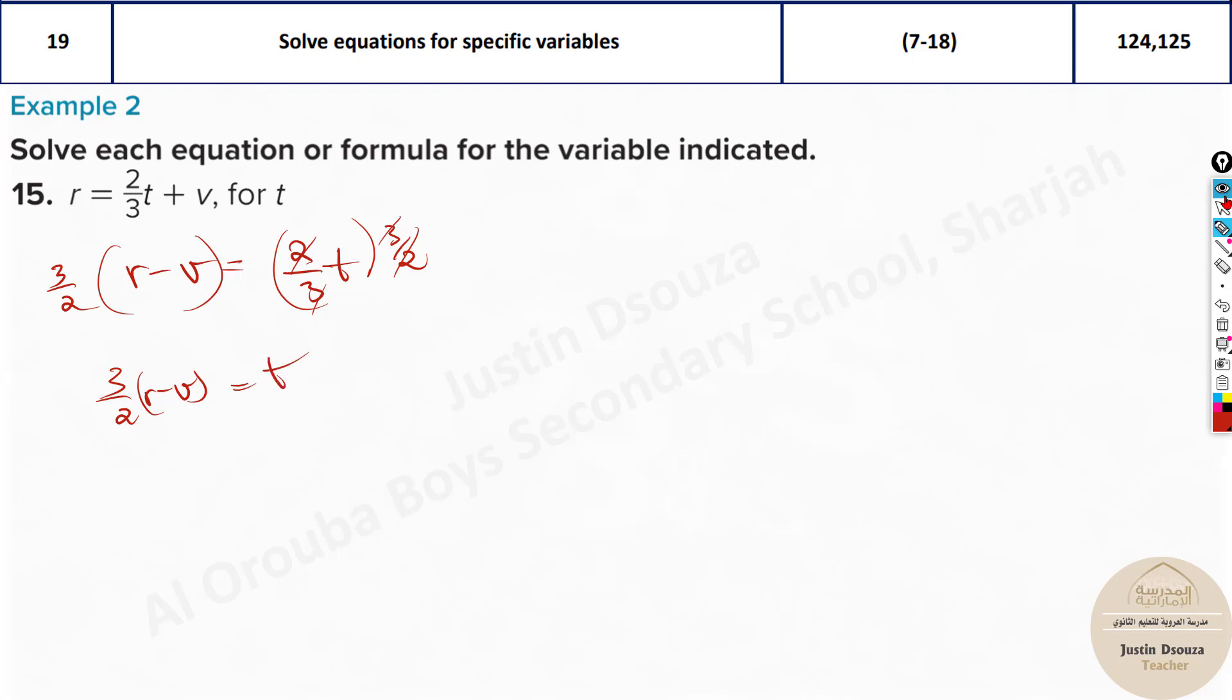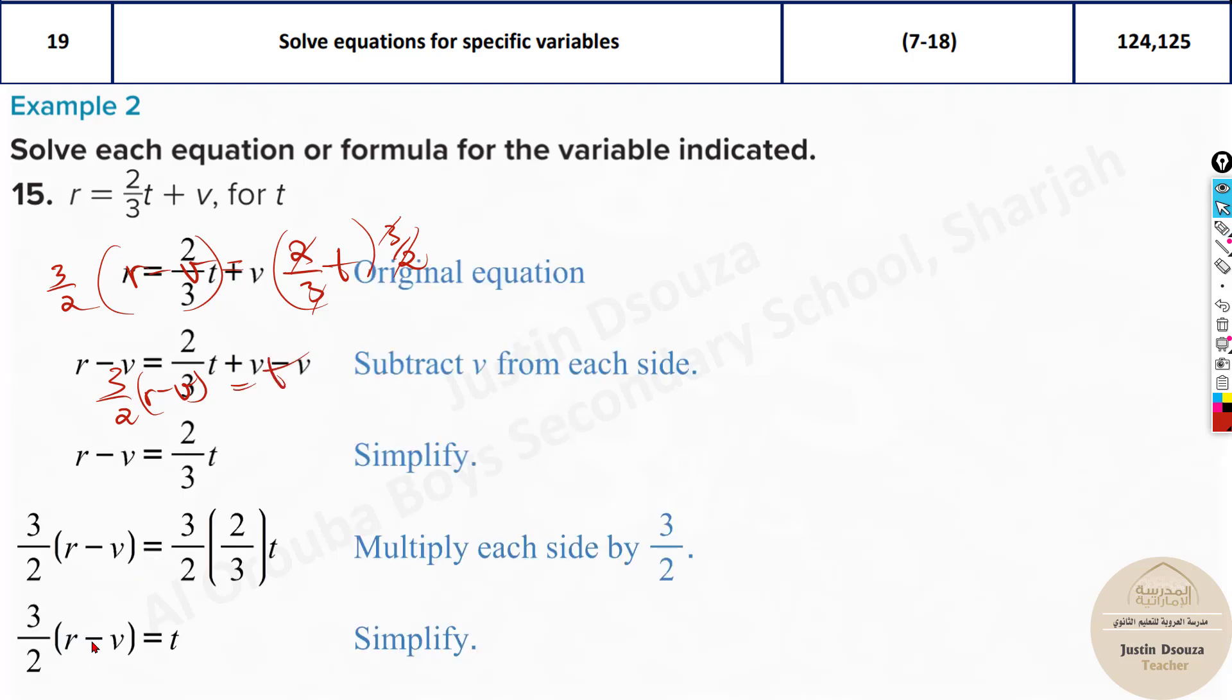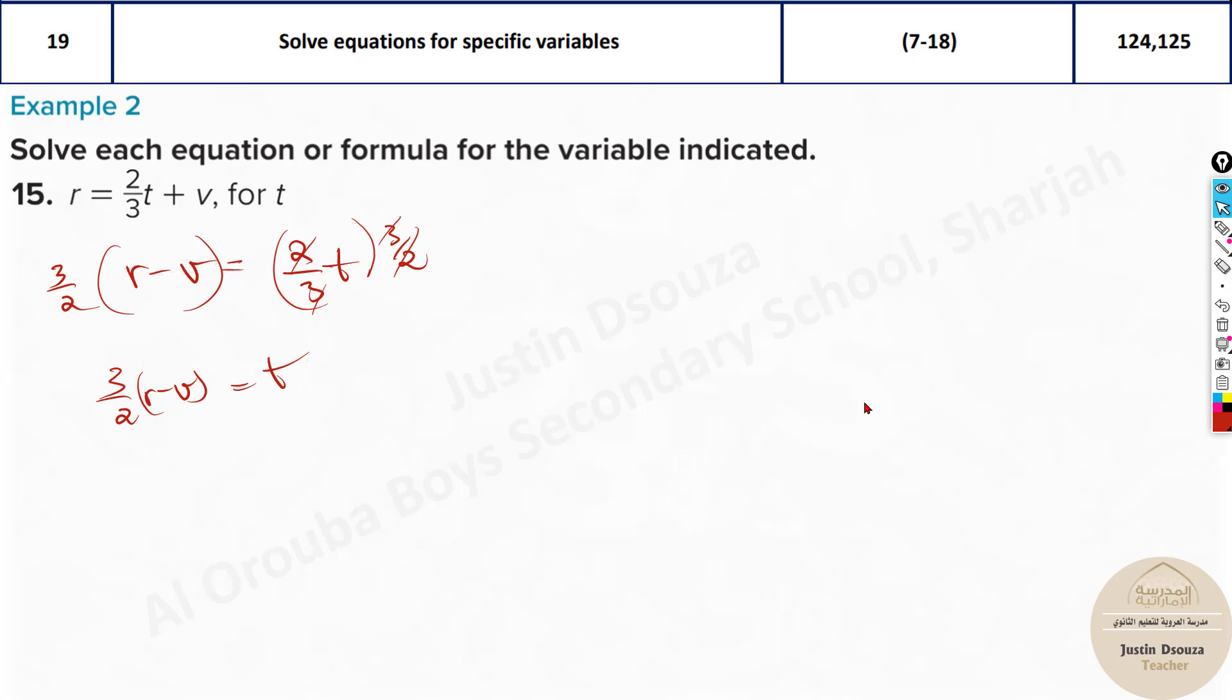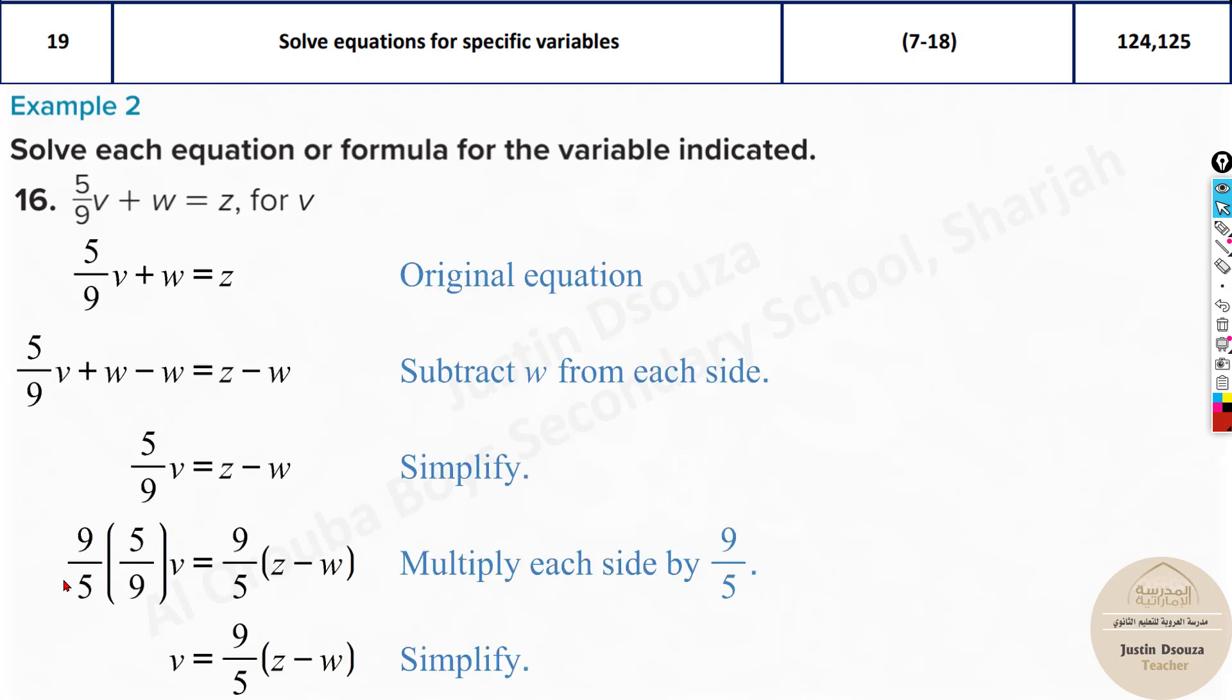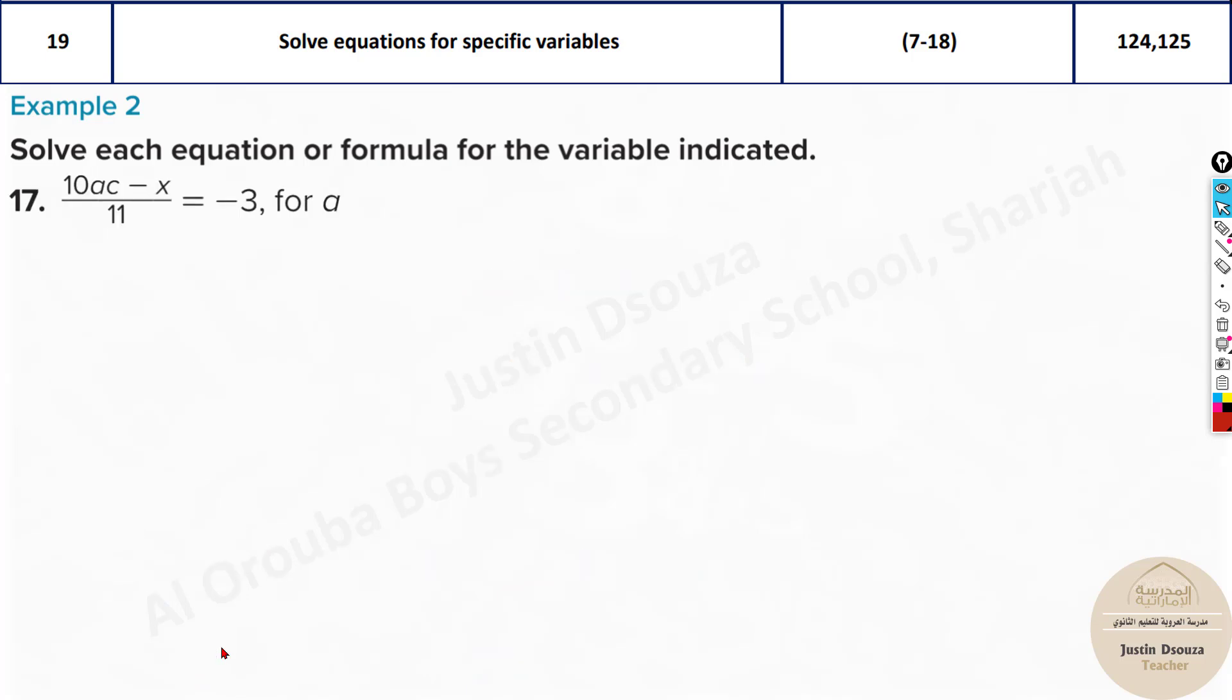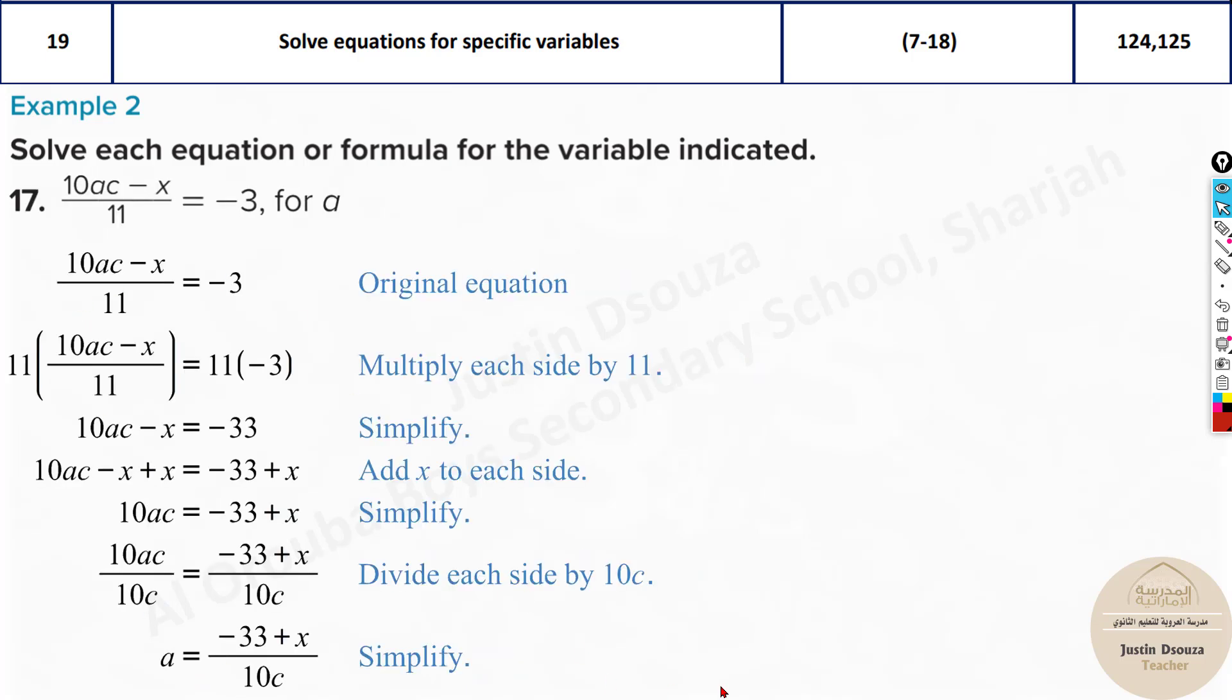You will have 3 by 2 R minus V equals T. So this might be the answer. Or let's see how it's written. Yeah, that's the answer. So this is very easy, isn't it? So please do solve the other problems. And then solve it by yourself and then check for the answers. Don't just jump to the answers.